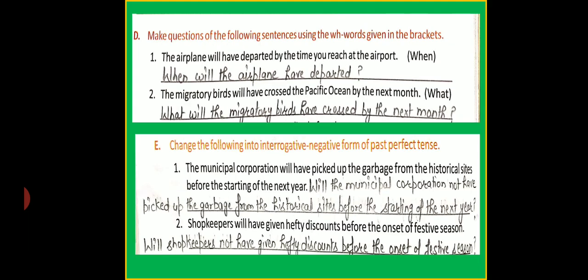In part D, you have to make sentences in question form. The airplane will have departed by the time you reach the airport — when will the airplane have departed? The migratory birds will have crossed the Pacific Ocean by next month — what will the migratory birds have crossed by next month? In part D, you also have to change into interrogative negative. The municipal corporation will have picked up the garbage from the historical sites before the start of next year — will the municipal corporation not have picked the garbage from the historical sites before the start of next year? Shopkeepers will have given hefty discounts before the onset of festive season — will shopkeepers not have given hefty discounts before the onset of festive season?